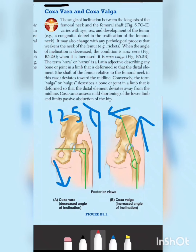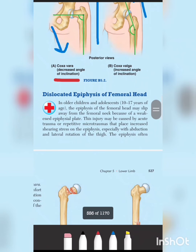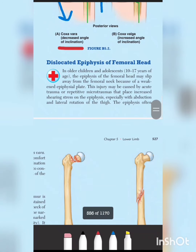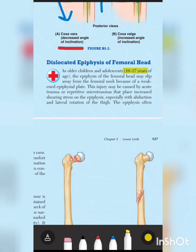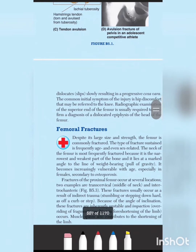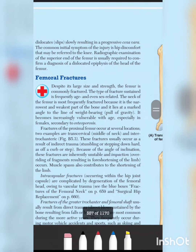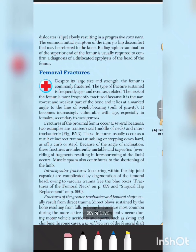This condition is more common in adolescence and children. Slipped capital femoral epiphysis can occur if there is trauma or repetitive stress using slight rotation of the thigh or abduction. Initially it can cause hip discomfort and knee pain. In the end, it can be caused by coxa vara.